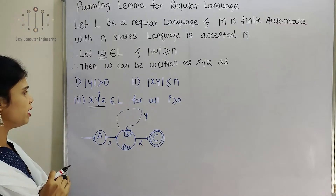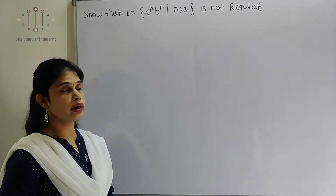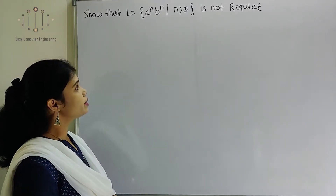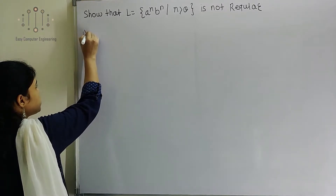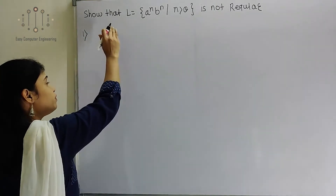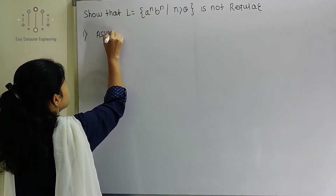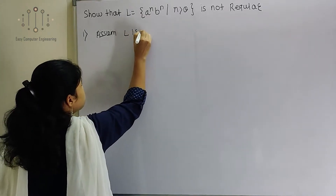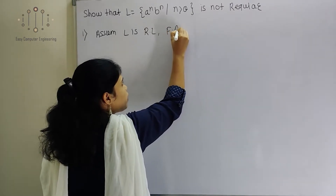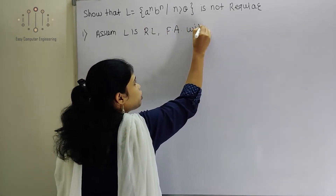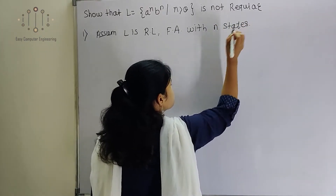Now we will prove with an example that L = {A^N B^N | N > 0} is not a regular language. First statement: we assume that the given language is a regular language which can be represented with the help of finite automata with N number of states.